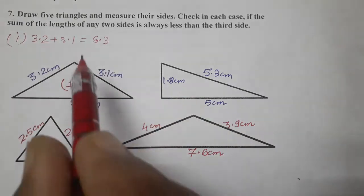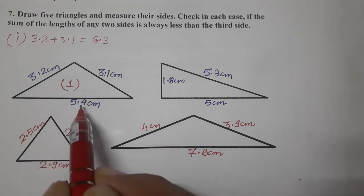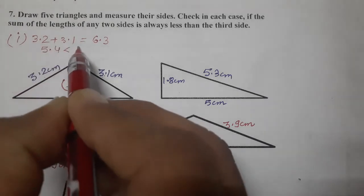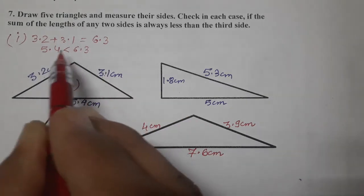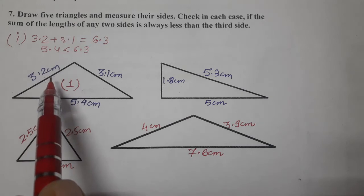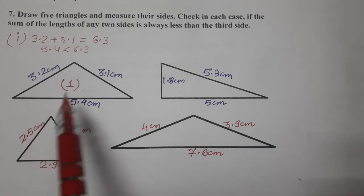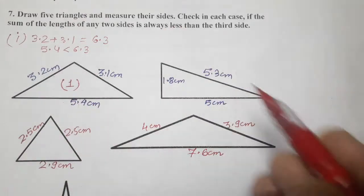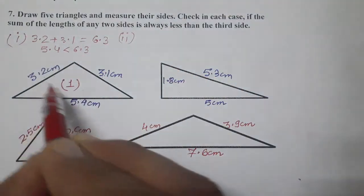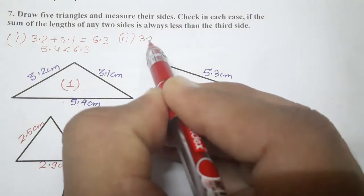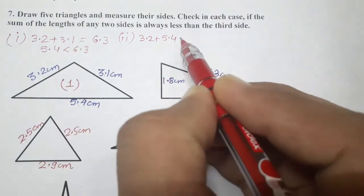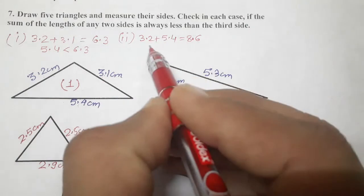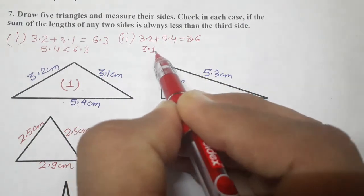3.2 plus 3.1 equals 6.3, and the third side is 5.4. So 5.4 is less than 6.3 — the third side is less than the sum of the other two. This is the first case. Now for the second case, we take 3.2 plus 5.4, which gives 8.6, and the remaining third side is 3.1. So 3.1 is less than 8.6.